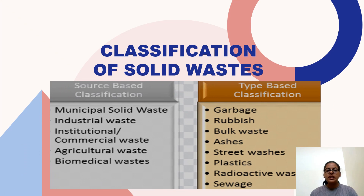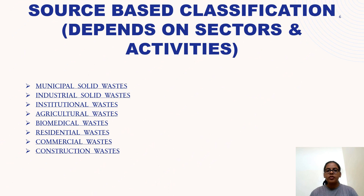So now we will see the classification of solid waste. Solid waste are classified on the basis of source and type. In source-based classification, we will study about municipal, industrial, institutional, agricultural, biomedical, residential, commercial, and construction-based waste. So let's study about each one of them.